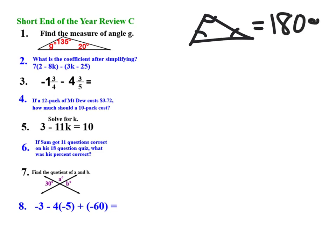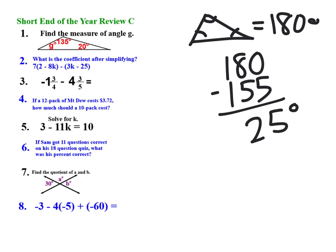So no matter what it looks like, it's going to equal 180 degrees. I know that I have 135 and a 20 showing, so all I need to do is take that 180 minus the 155 that I know is showing to find out that there is a 25-degree angle that must be G.